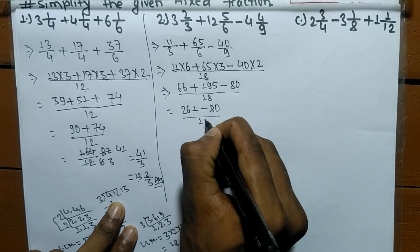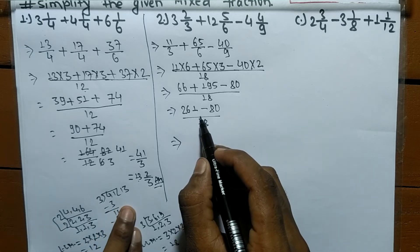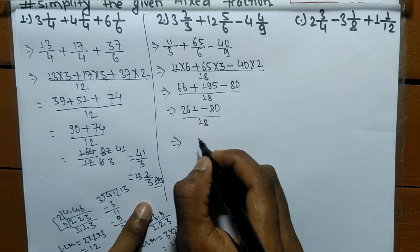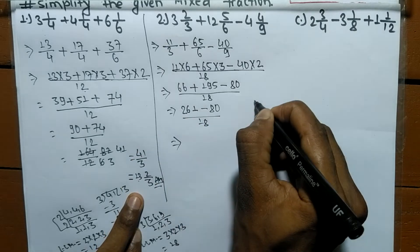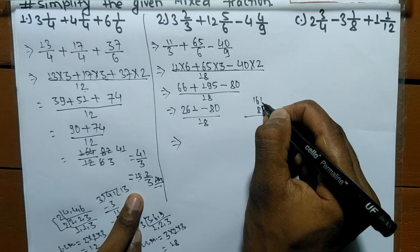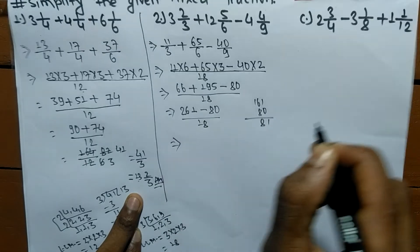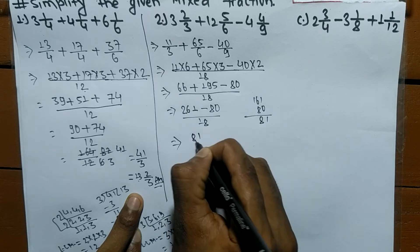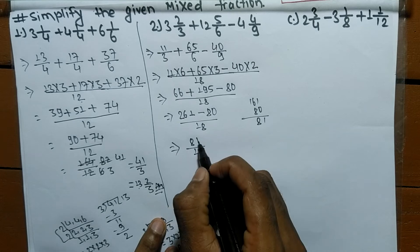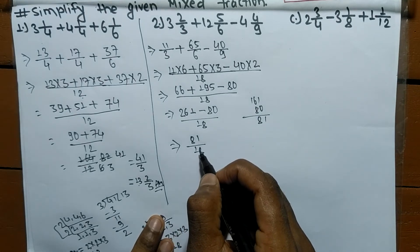So we have 261 minus 80 by 18. Now we subtract: 261 minus 80 gives us 181 by 18.